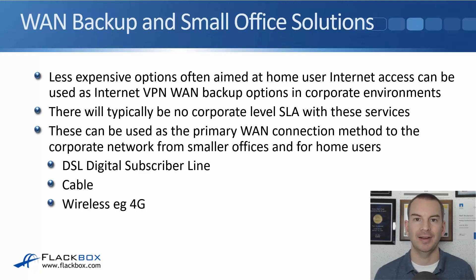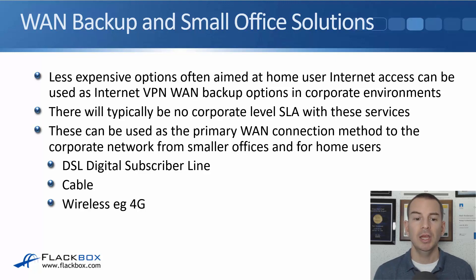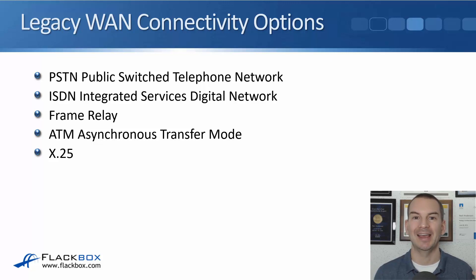Leased lines, MPLS, and satellite connections are more expensive, so in a large office we would use one of those and probably a backup solution as well. If we've got a small office with just a handful of users, maybe we can't justify using one of those more expensive options. Our options here are DSL (digital subscriber line), cable, and wireless, for example 4G — the kind of options you can get at home. There are also legacy options like PSTN — going over the public switched telephone network. You may remember those old 56K dial-up modems; that would be using the PSTN for your WAN.